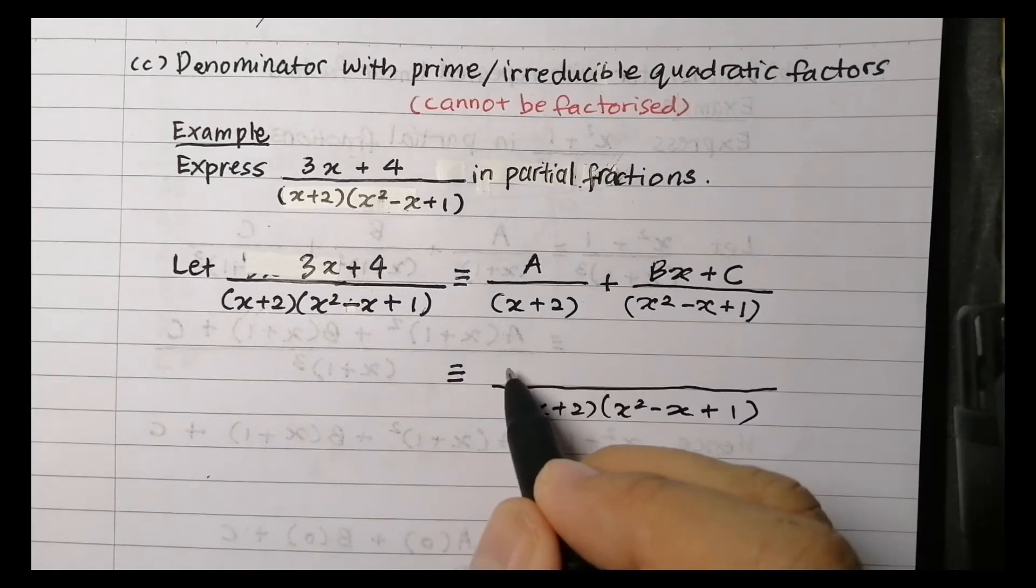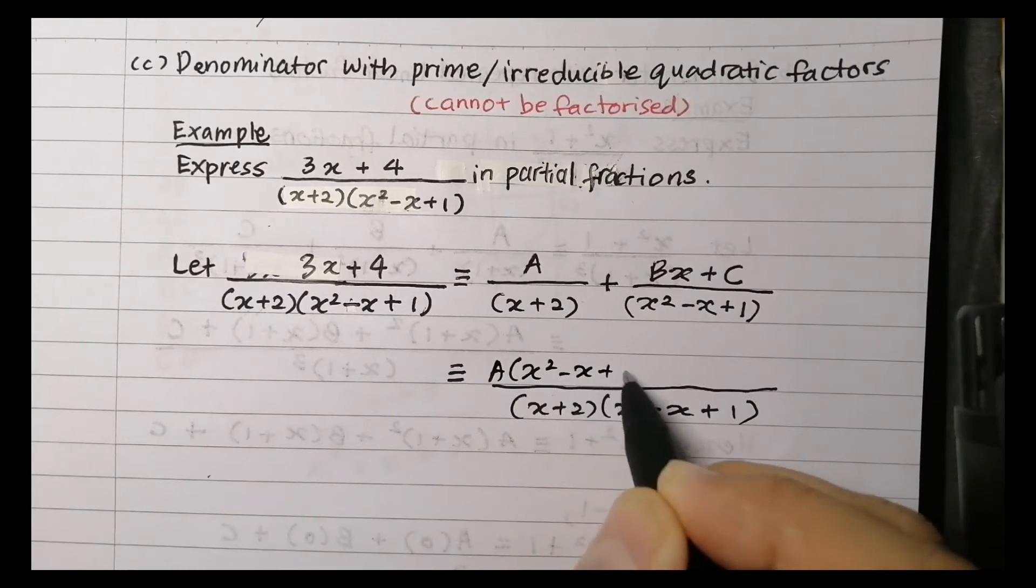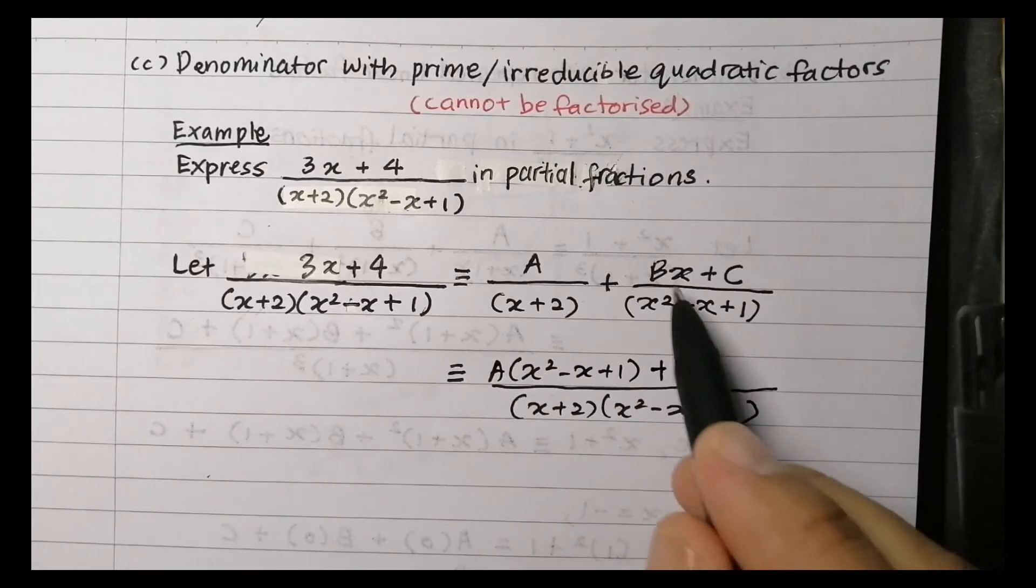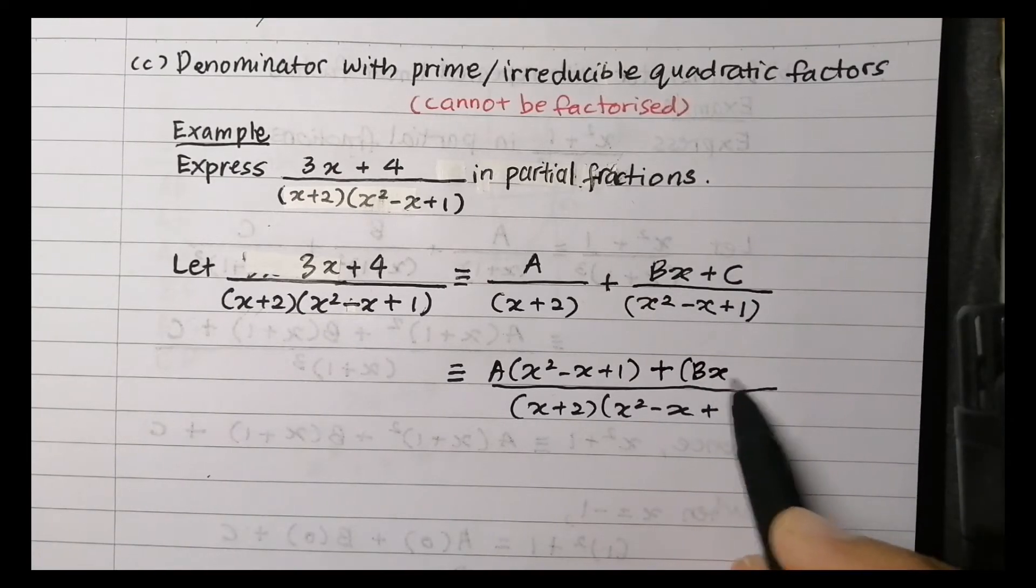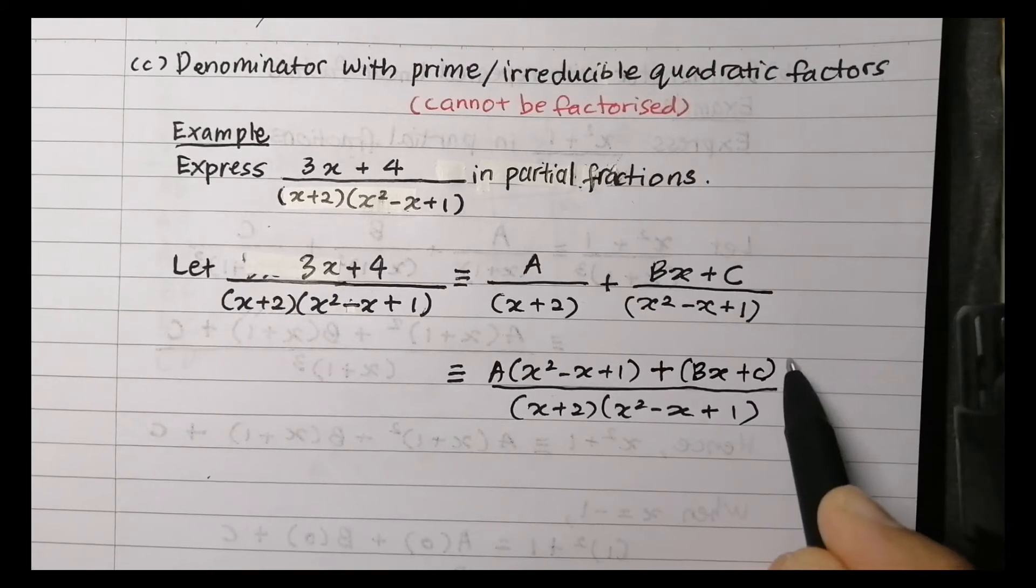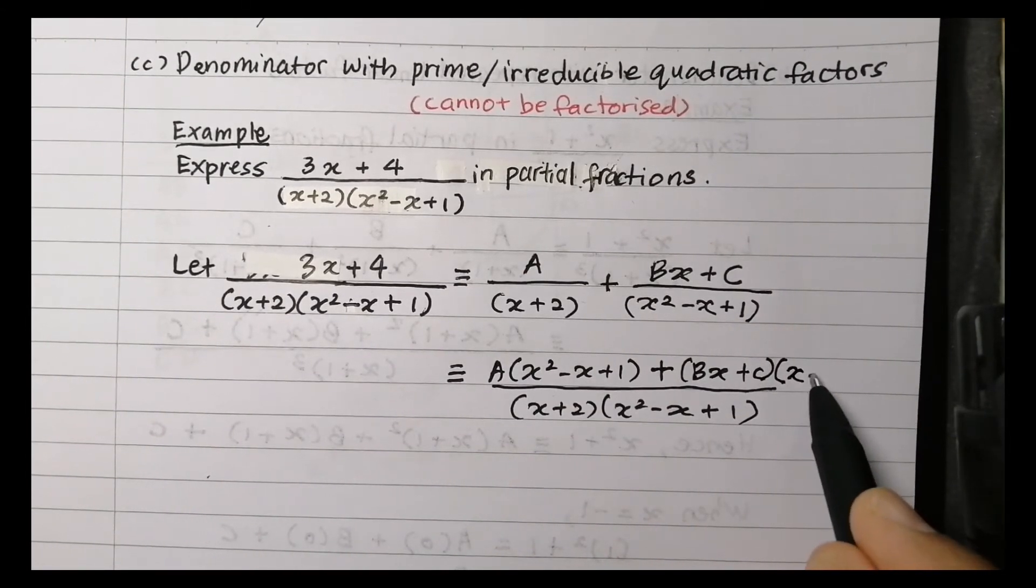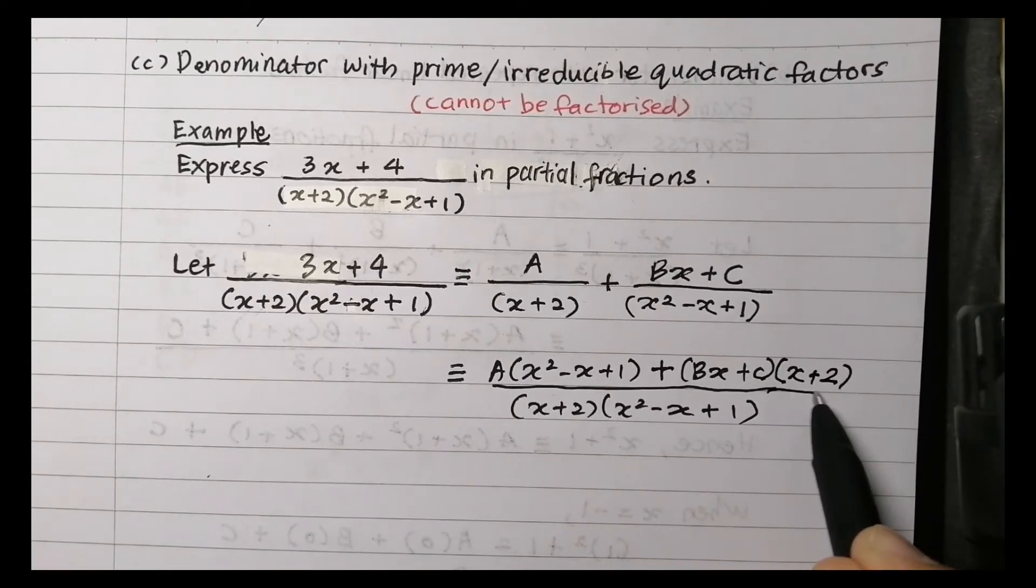Next, express as a single fraction. So the numerator we are going to use cross multiplication. We have A times (X squared minus X plus 1) plus (BX plus C) times (X plus 2).